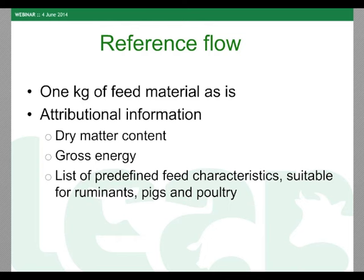We speak about the reference flow and not the functional unit, because the end product of the feed supply chain is used in livestock production systems — the functional unit is defined there. The reference flow for all products is one kilogram of feed material as-is, as a fresh product containing a certain amount of moisture. Attributional information attached includes dry matter content, gross energy, and a predefined list of feed characteristics suitable for ruminants, pigs, and poultry.